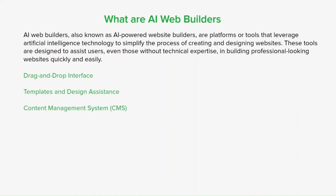AI web builders also come with an integrated CMS that lets you create, edit, and manage your website's content easily — adding new pages, updating text, inserting images, and incorporating multimedia content. They also ensure websites are responsive, meaning they adapt and display properly on various devices and screen sizes such as desktops, tablets, and smartphones, which is crucial for optimal user experience.